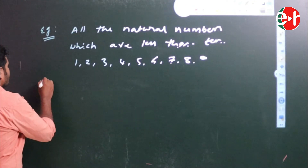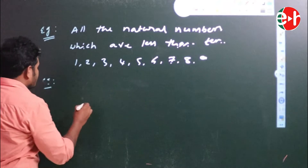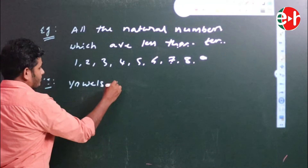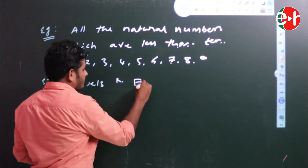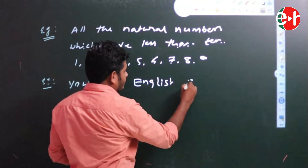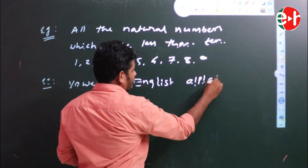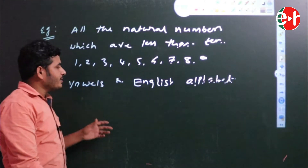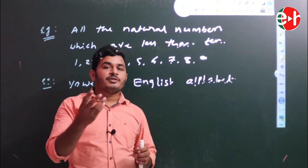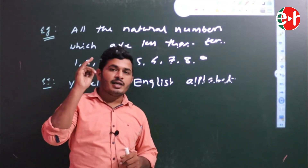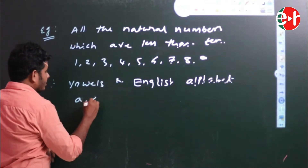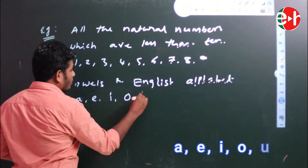One more example: vowels in the English alphabet. What are the vowels in the English alphabet? There are 5 vowels: A, E, I, O, U.